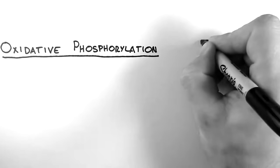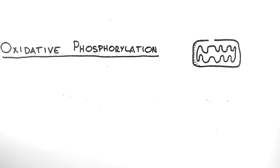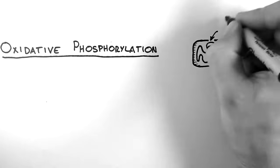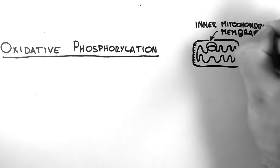You may remember that a mitochondrion looks a little like this. It has an outer membrane and an inner membrane, and we are going to take a close up look at the inner mitochondrial membrane.